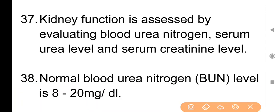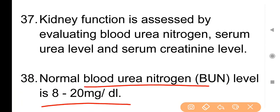Point No. 38: Normal blood urea nitrogen (BUN) level is 8–20 mg per deciliter।